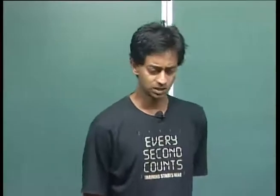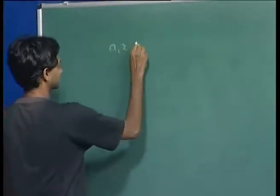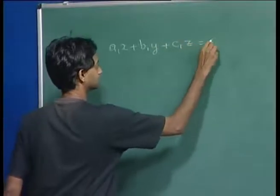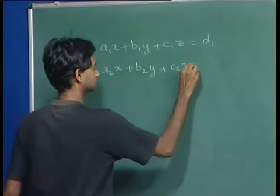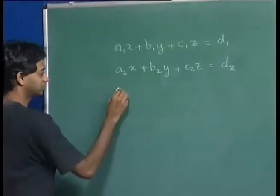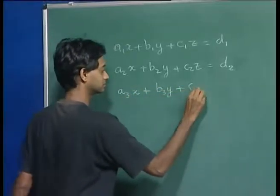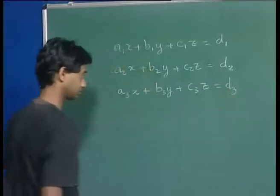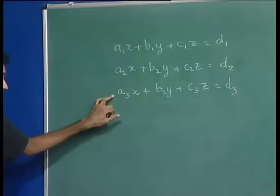So far we have looked at determinants and various properties of determinants. Now determinants appear when we look at solutions of linear equations. Suppose you have a set of three linear equations of the form A1x plus B1y equal to D1. I am taking three, but I can extend it to any number of equations.